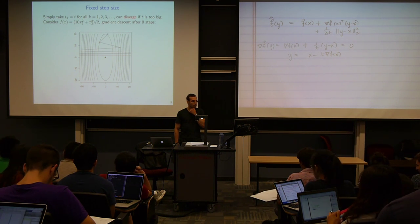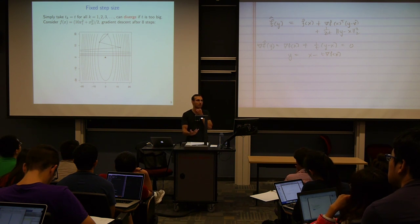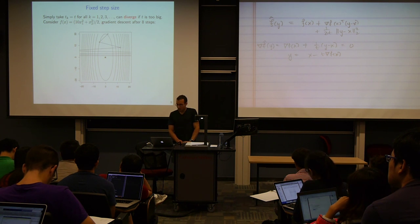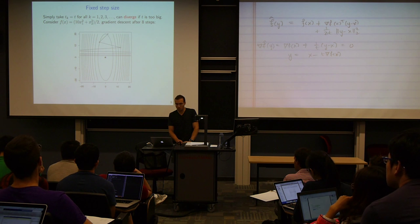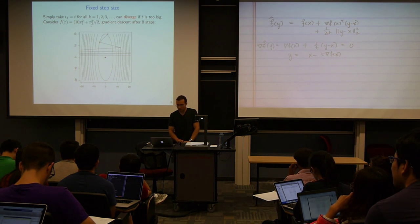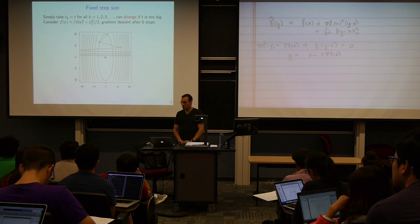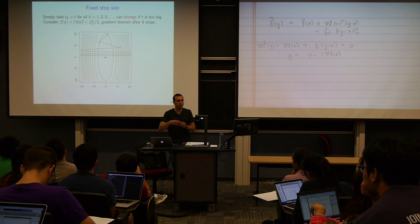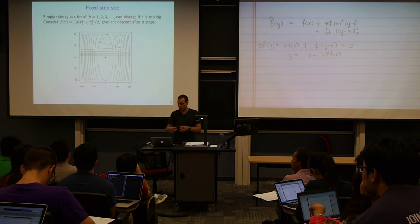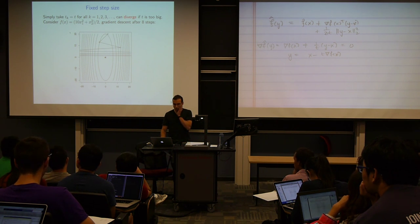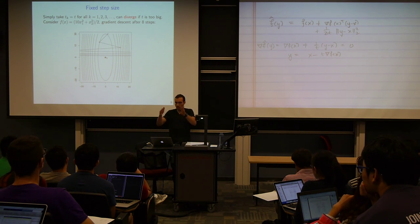There are a few options for choosing the step size. The first is to choose a fixed constant — just fix it at some value t for all k. I've taken a 2D quadratic function — 10x_1^2 plus x_2^2 over 2 — and drawn its contours in R^2. Each ellipse represents level sets of the function. Starting at some x_0, running gradient descent with a large step size: if the step size is too large, gradient descent diverges and does not approach the optimum.